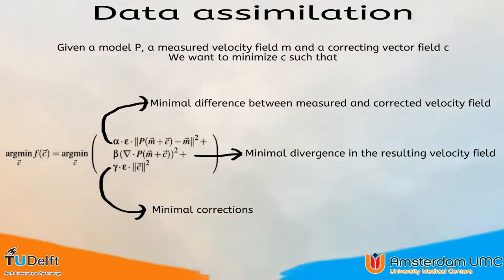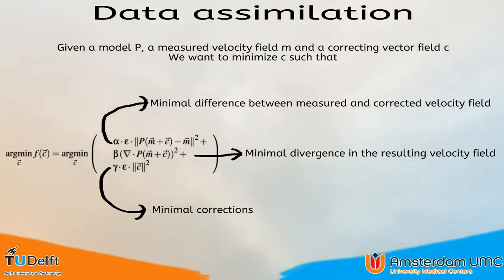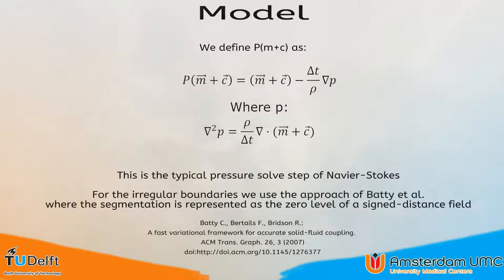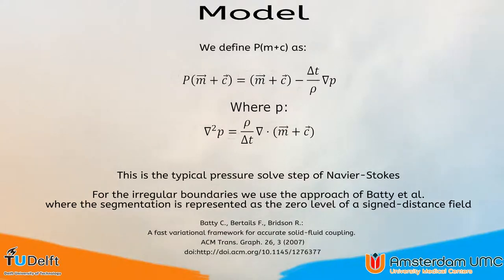We use the reliability per voxel, epsilon, to steer the model towards the measurement if the measurement is reliable. For voxels that have a low or no reliability, the model becomes more dominant. For spatial interpolation, the voxels to be interpolated are marked as completely unreliable, meaning these voxels will be filled in by the model while the reliable measured voxels are used as a guide. As a model, we use the typical pressure solver step of the Navier-Stokes equation. This ensures that the flow is divergence-free, physically based, and stays within the segmentation. We solve this Poisson equation using the preconditioned conjugate gradient algorithm with an incomplete Cholesky factorization as preconditioner.